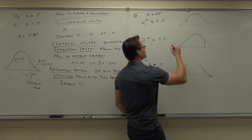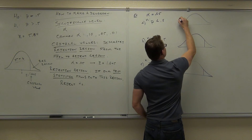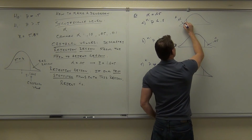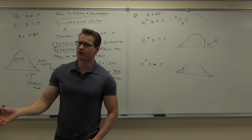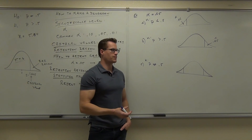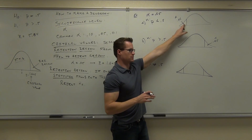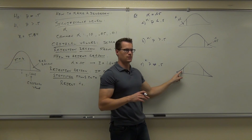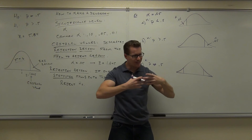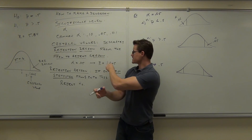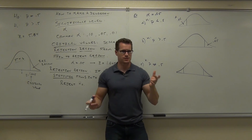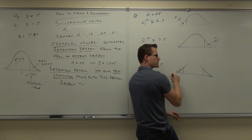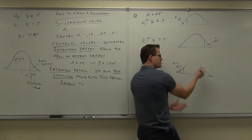Now, if our alpha is 0.05, that means the area in each tail for our two-tail test is not 0.05 — notice that all of our alpha is in one tail for a one-tailed test. But if you have two tails, you're splitting it. So with two tails, this is no longer 0.05 — this is alpha over 2, or 0.025. That's how you're finding your critical values for a two-tail test.